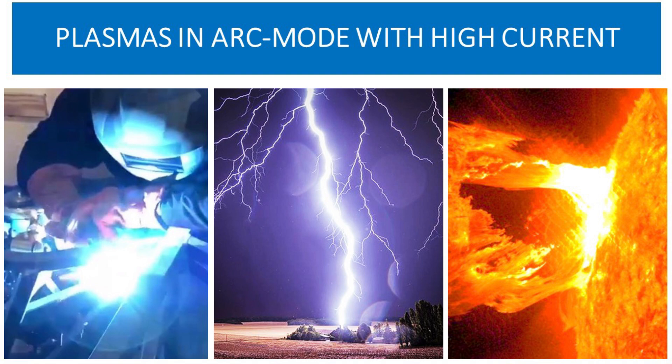In arc mode, all plasmas have the same basic characteristics. They may be like an arc welder's torch as on the left, or a lightning bolt seen in the centre, or the surface of the sun on the right. In fact, the surface of most stars are arc mode plasmas in their brilliance, no matter what is happening deeper down.